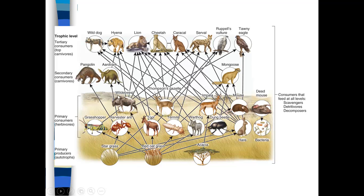Primary consumers eat the organic carbon directly from producers: grasshopper, harvester ant, topi, termite, warthog, dung beetle, hare, bacteria, wildebeest, Thompson's gazelle, impala, and mouse. Secondary consumers are primarily carnivores eating the primary consumers. At the top of the trophic levels are tertiary consumers, which can eat both primary and secondary consumers. Scavengers feed on dead and decaying material, detritivores scavenge primarily plants, and decomposers break down all types of decaying material.